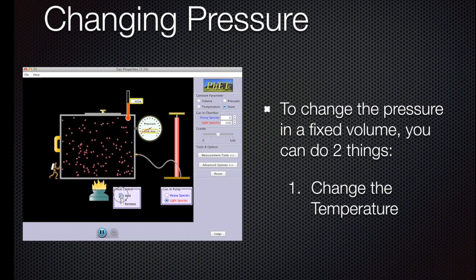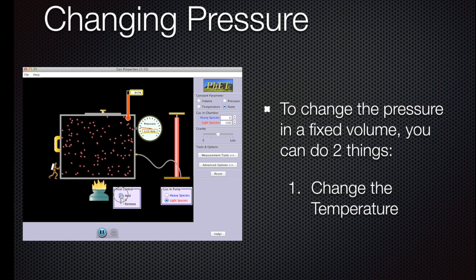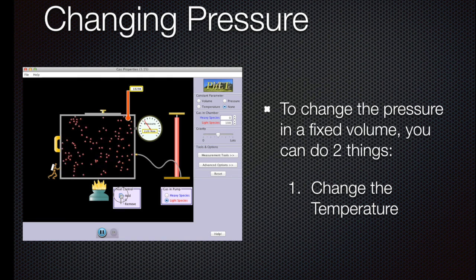To change the pressure in a fixed volume, you can do two things. You can change the temperature by heating up the molecules, where they will hit the surfaces more often, creating more force.